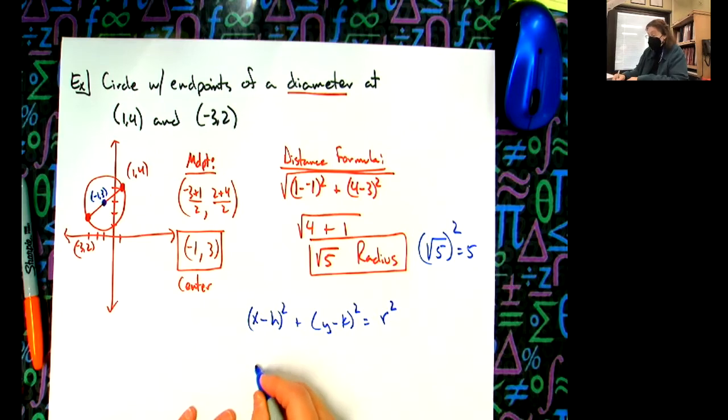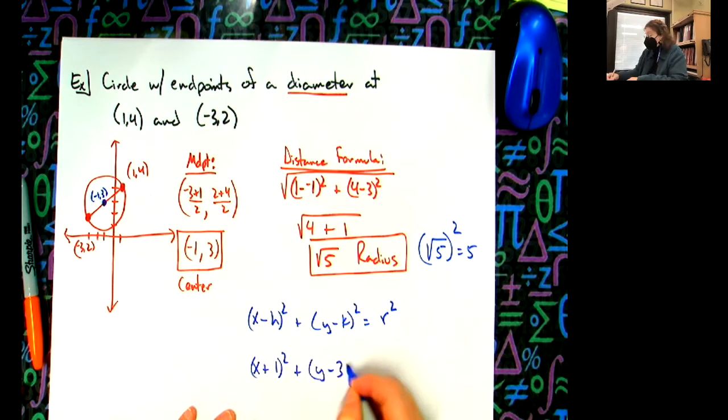So then I'm going to have (x+1)^2 + (y-3)^2 = 5, assuming I didn't make a mistake.